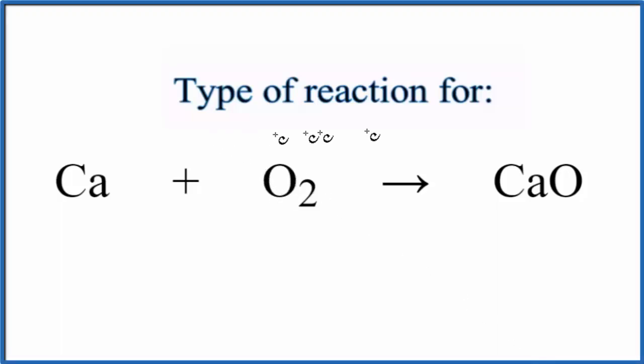In this video we'll take a look at the type of reaction for Ca + O2 → CaO. This is calcium plus oxygen gas and we get this calcium oxide here.